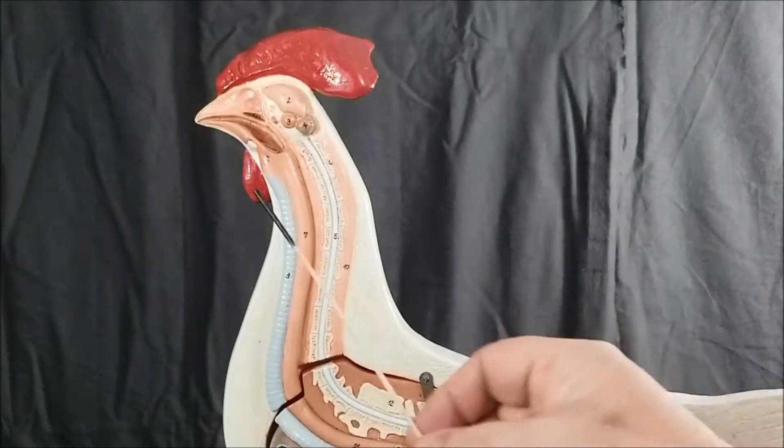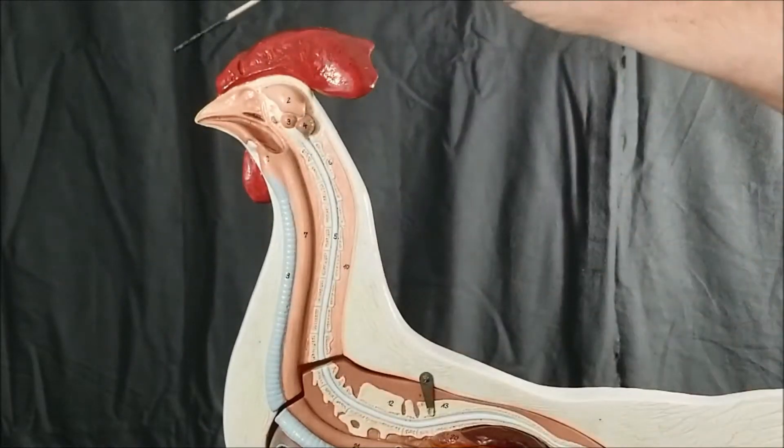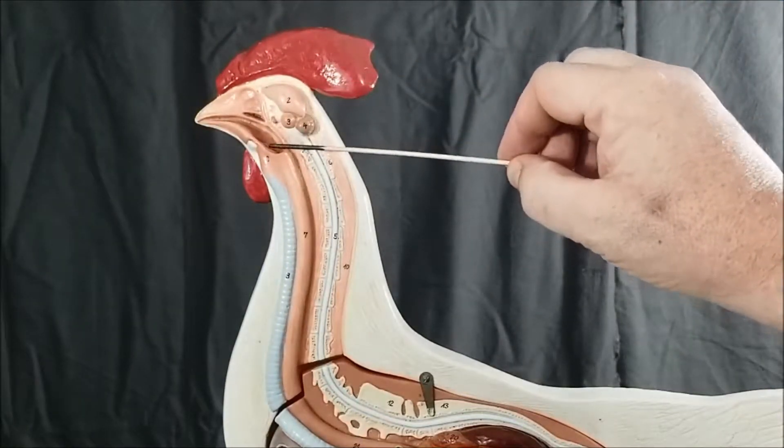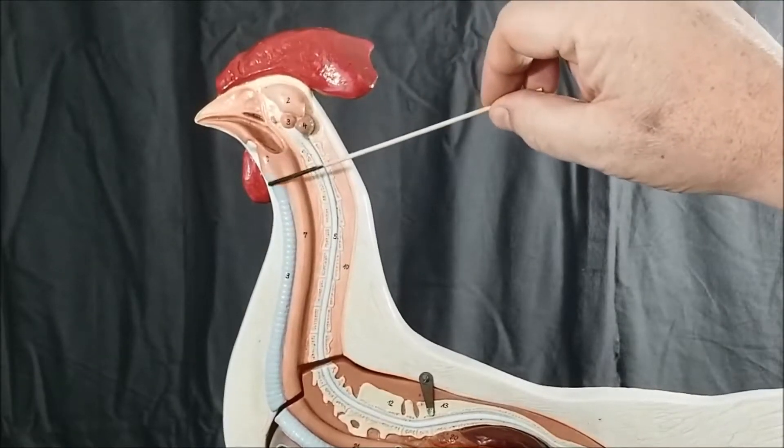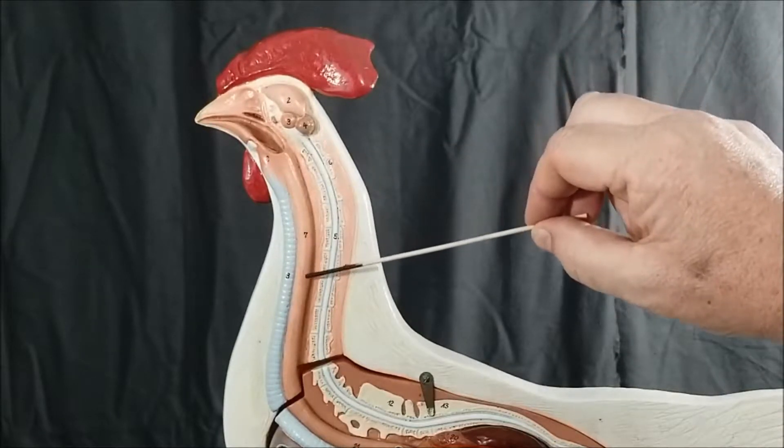We'll start off by looking at the mouth. Here we have the tongue, and there's the mandibular beak, and the maxillary beak on top. The space in the back of the mouth is the pharynx, and that hole right there is the glottis. Here we have the larynx and the trachea, and paralleling the trachea we have the esophagus.